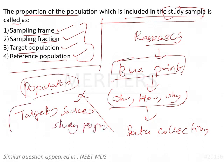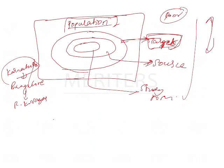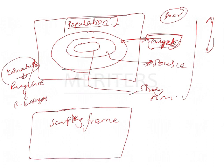Source population and study population — study population is also known as sampling population, and also known as sampling frame. From the sampling frame, samples are collected from the targeted population.